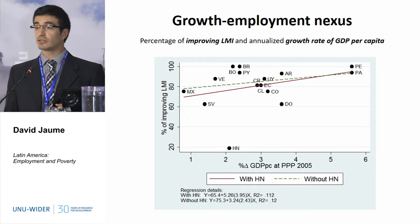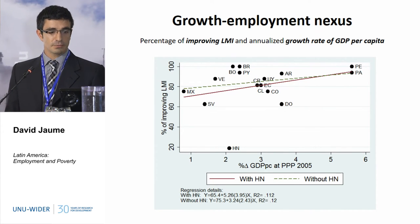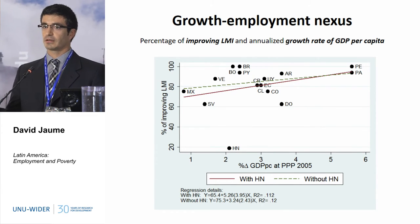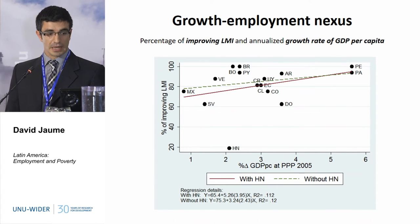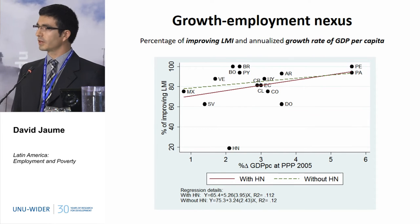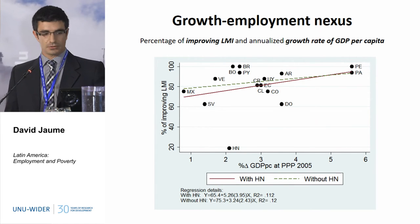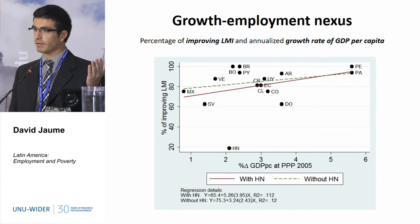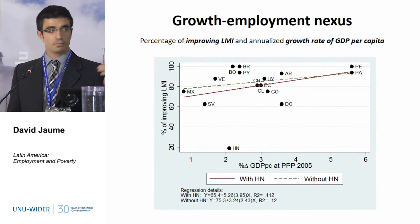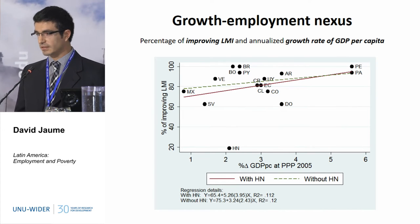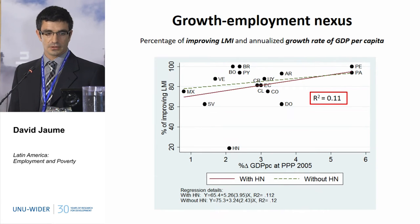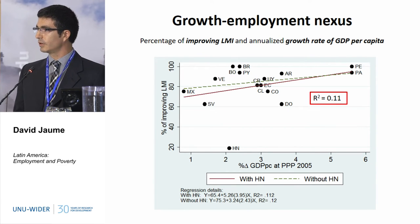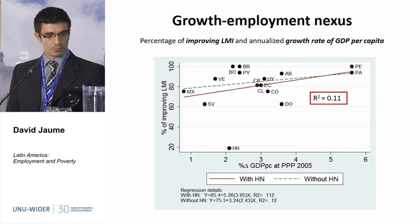At the other extreme, the two countries with the lowest rate of economic growth — Mexico and El Salvador — have a much more mixed experience in terms of labour market indicators. In the middle, countries with moderate rates of economic growth are very heterogeneous. Honduras and Bolivia, for example, have similar rates of economic growth but very different experiences in terms of the percentage of labour market indicators that improve. As a result, the R-squared of this relationship is very weak — it's only 0.1.